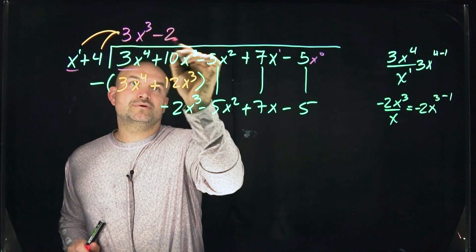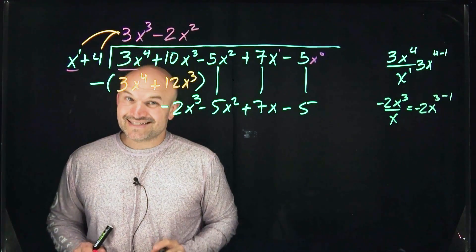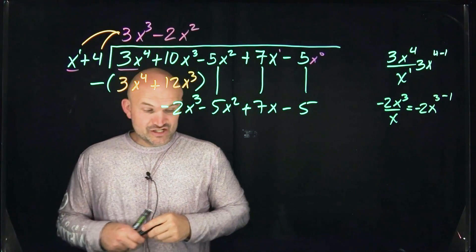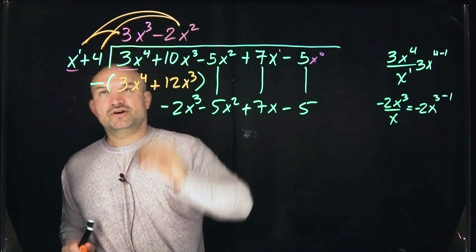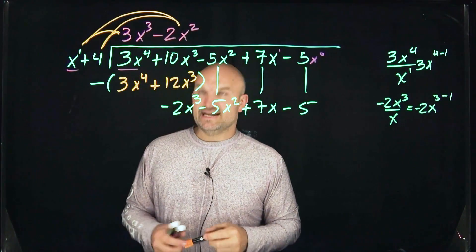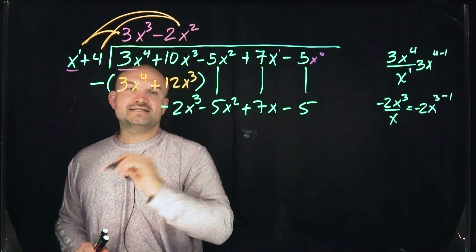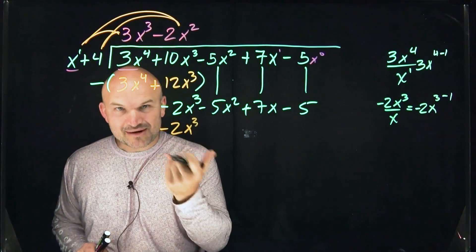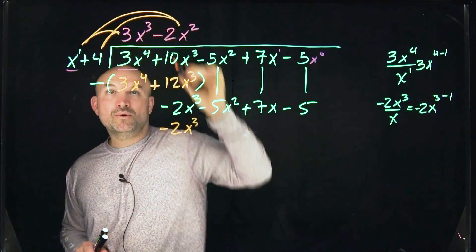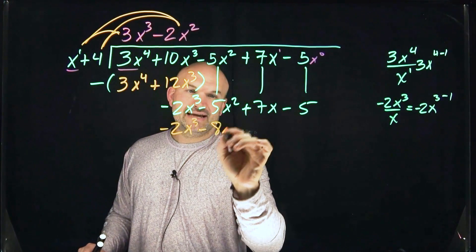So I'm going to take negative 2x squared. That's the second term of our quotient. And just like I did in the first round, I'm going to multiply that by both terms of our divisor. So negative 2x squared times x is going to be negative 2x cubed. Notice how they're exactly the same. That's what I'm looking for. Negative 2x squared times 4 is going to be negative 8x squared.